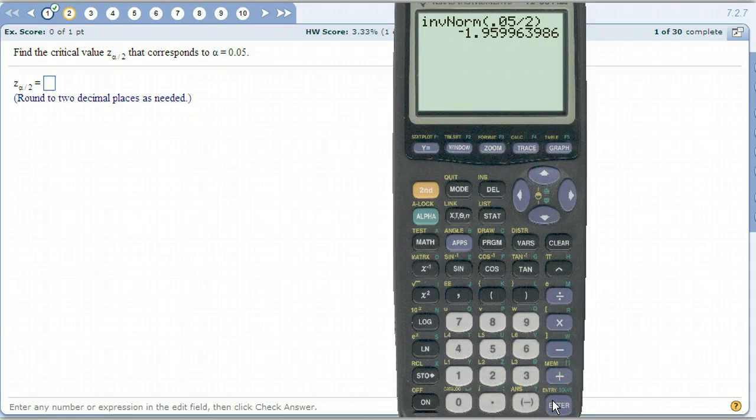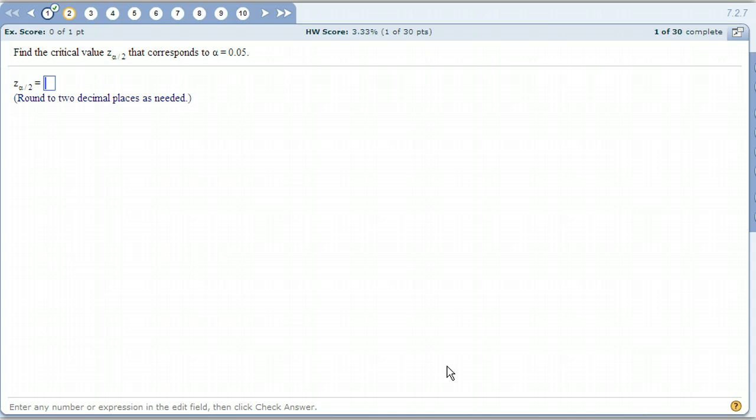So negative 1.9599, two decimal places, negative 1.96. But remember, don't put the negative in there. Just take the absolute value of that number. It's symmetric. We're looking for the upper number. So we can find the lower number and just change the sign.